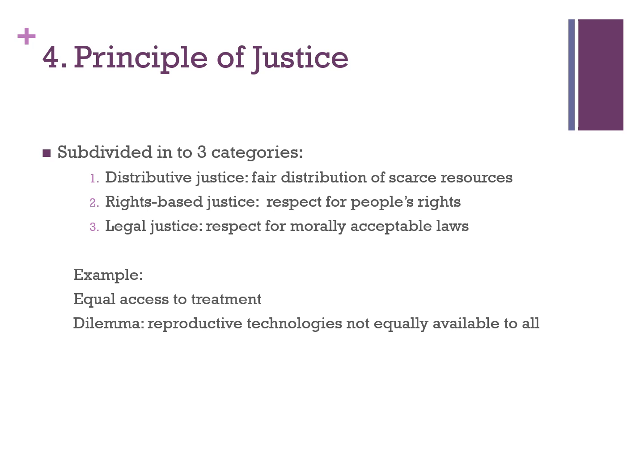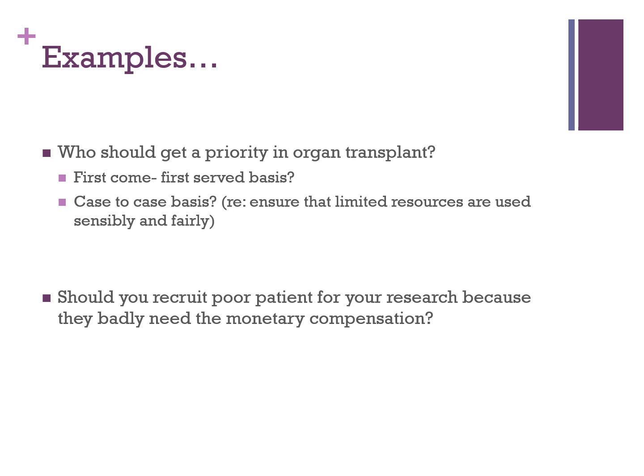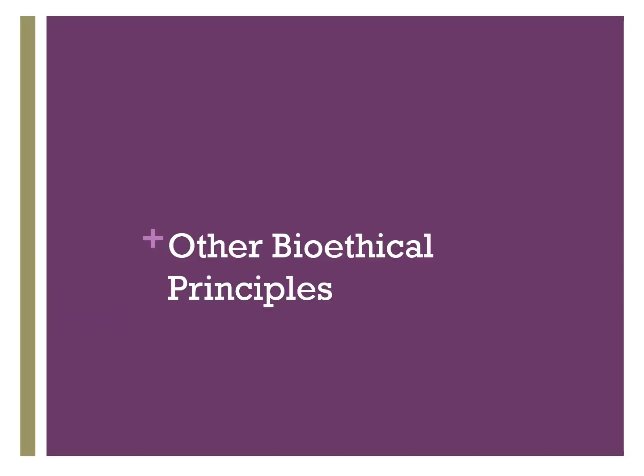Justice is subdivided into three categories: distributive justice — fair distribution of scarce resources such as rapid testing for coronavirus; rights-based justice — respect for people's rights; and legal justice — respect for morally acceptable laws. This encompasses equal access to treatment and ethical dilemmas, such as whether some reproductive technologies are equally available to all. For example: given the choice, who gets priority in organ transplant — first come first served, case to case based on who has the most chance to live, or who could afford treatment? Or should you recruit poor patients for research because they badly need monetary compensation? These are issues of justice in the healthcare system.